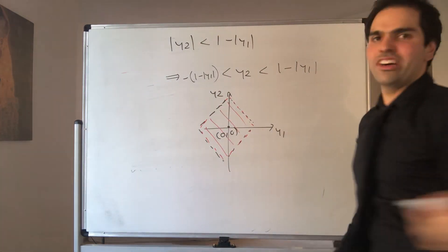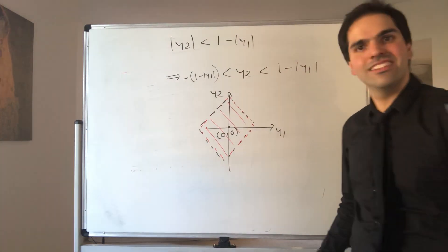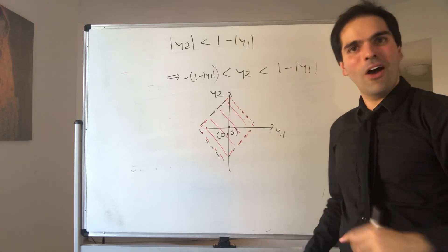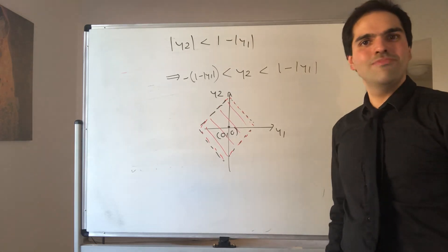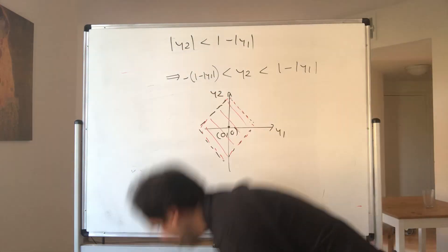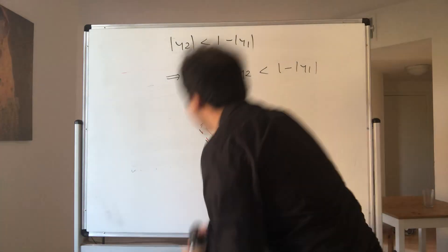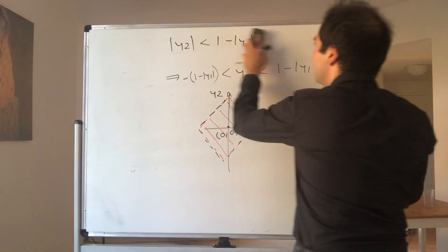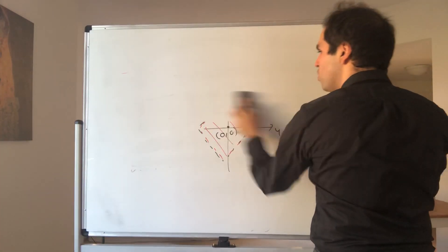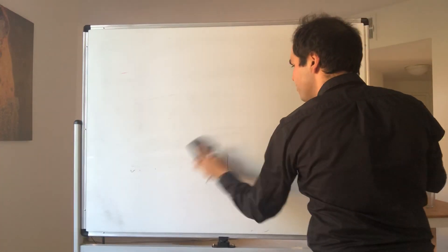And you might say: this is not a square, this is a diamond. Well, no problem — there's a metric for that as well, and it's called the infinity metric.